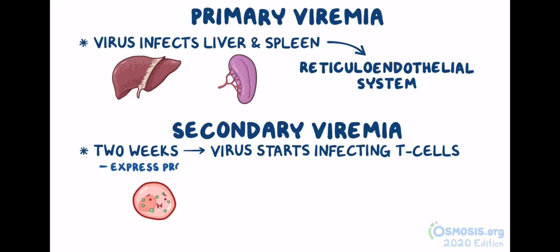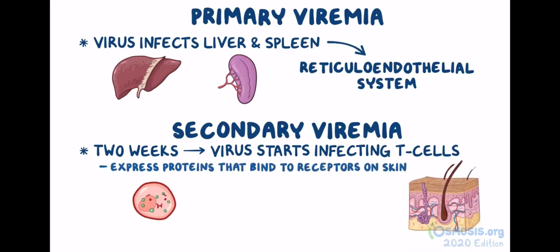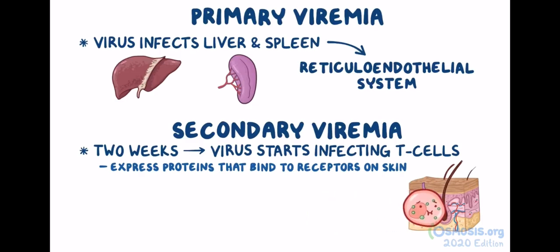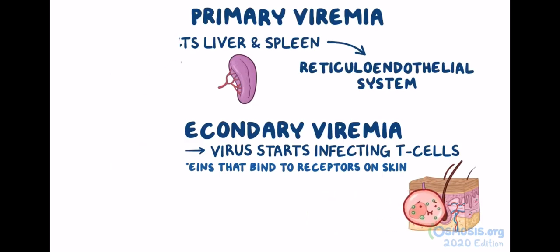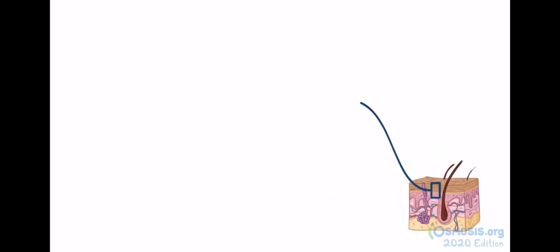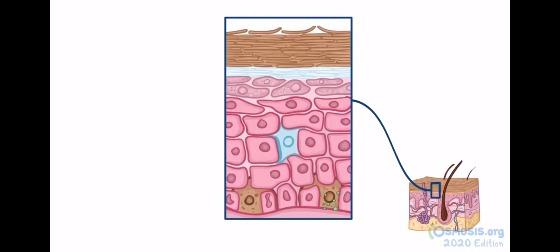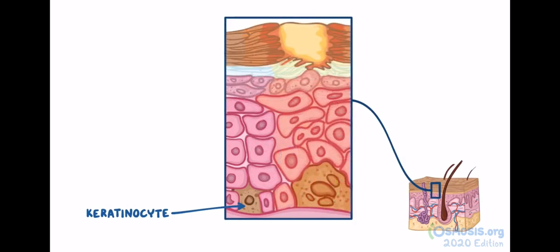Infected T cells start expressing proteins that bind to receptors on the skin cells — it's a bit like the virus hitching a ride in the T cell to get to the skin. Once the T cells reach the skin, they release the viruses, which start infecting keratinocytes. The infection spreads through the skin, going directly from cell to cell. Sometimes the infected keratinocytes start to fuse together and create giant multinucleated cells called Tzanck cells.